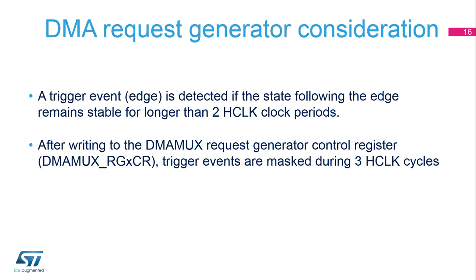A trigger event signaled by an edge is detected if the state following the edge remains stable for longer than two AHB clock periods; this delay ensures that glitches on the trigger input are not taken into account. After writing to the DMA-MUX RG-XCR control register, trigger events are masked during three AHB clock cycles. This delay masks possible trigger events that could occur while the control register is updated, causing metastability.